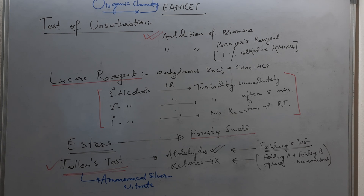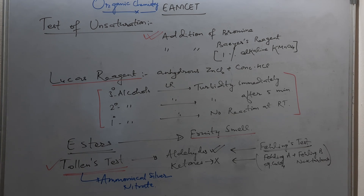The test of unsaturation can be done with the help of addition of bromine — the red-brown color of bromine is discharged. Also, one percent alkaline KMnO4, that is called Baeyer's reagent, can be used.